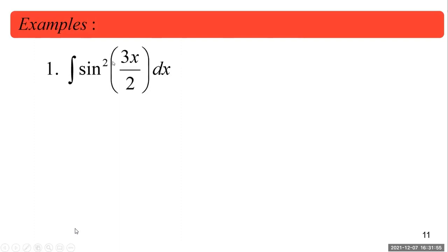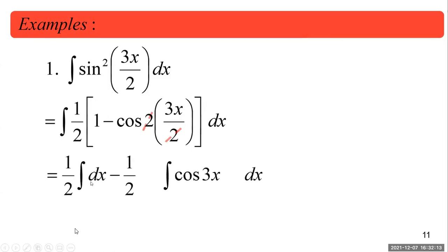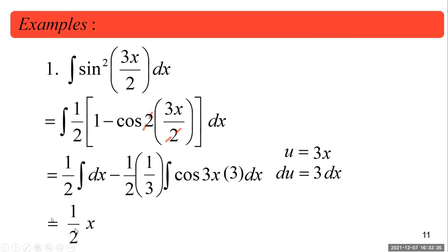The two-halves cancel, leaving one-half times the integral of (1 minus cosine 3x dx). The cosine term is readily integrable — you just need a factor of 3, so supply a one-third. The result is one-half x minus one-sixth sine 3x plus C. There's no problem with that example.